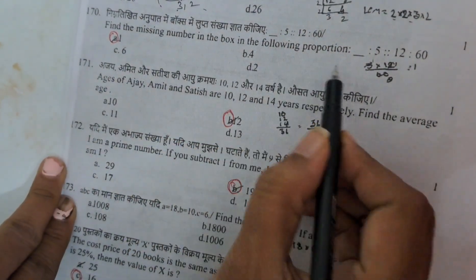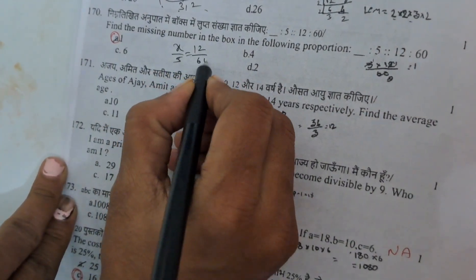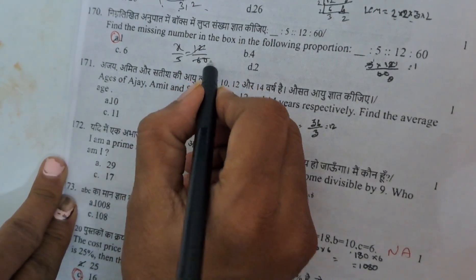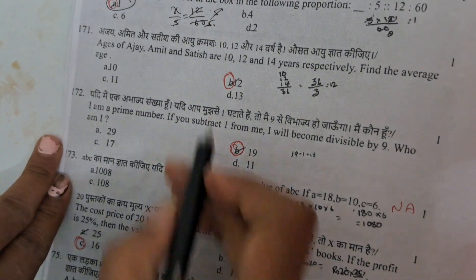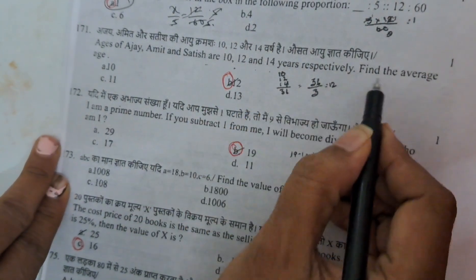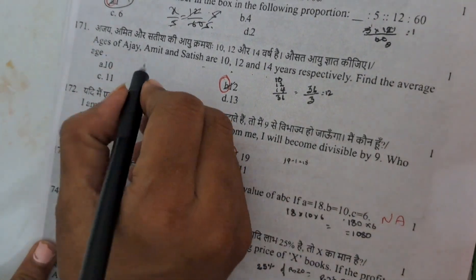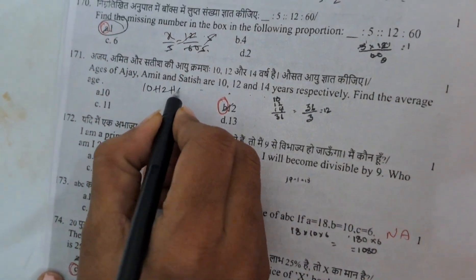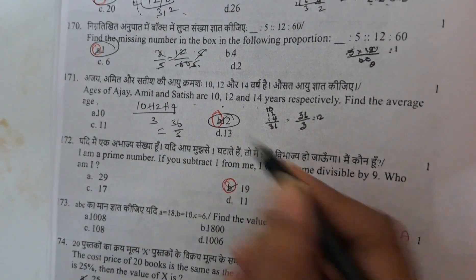And next find the missing number in the proportion. This is the proportion. X by 5 equals to 12 by 16. Means 12 times 5 by 16. 5 comes to here, 5 by 1. The answer is 1. And next ages of Ajay, Amit, Sadisha are 10, 12, 14. What is the average? Average is nothing but the sum of the ages by number of ages. 10 plus 12 plus 14 by 3. Means here 36 by 3 is nothing but 12. Answer is B.